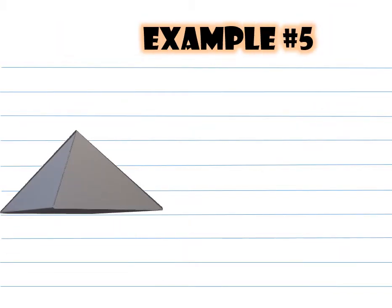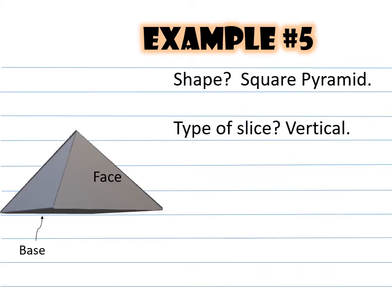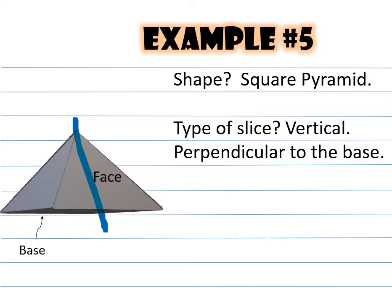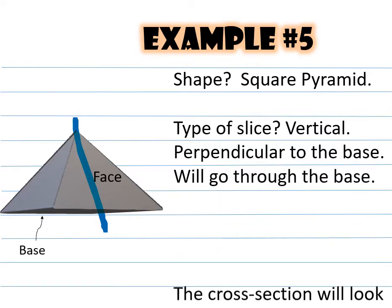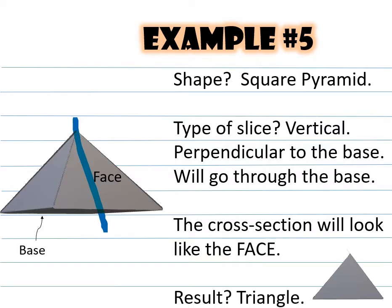Example number five — we're halfway there because there's a total of ten examples. This shape is called a square pyramid because the base is a square. The type of slice is vertical, going through the apex — it is perpendicular to the base, going through the base. The cross section will look like the face. The result of the cross section is a triangle.